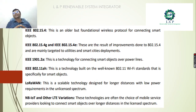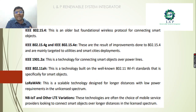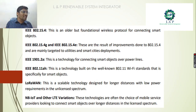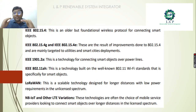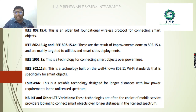15.4G and 15.4E are mainly targeted for utilities and smart city deployments. The next important category is ITU-T 1901.2A, which is the technology used for connecting smart devices over power line networks — for example, it can be used in metro stations. Next is IEEE 802.11AH, an advancement over the well-known 802.11 Wi-Fi standard. And LoRaWAN is a scalable technology designed to transmit signals over the longest distances.